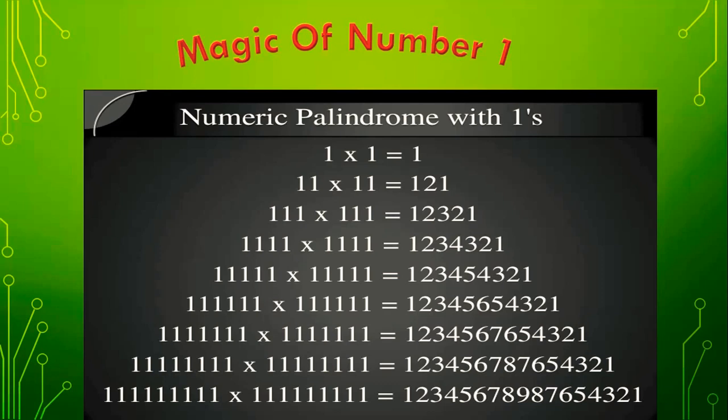Again, you see: multiplying 1111 × 1111 gives you 1234321. This is also a palindrome number. Like that, you can multiply any number made of all 1s by the same number, and you will get a palindrome number. You can see the pattern — it looks like a triangle.